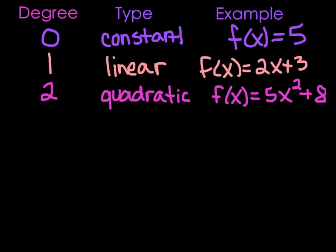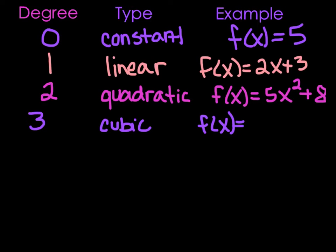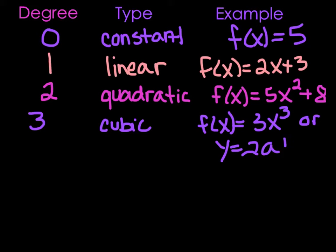If our degree is 3 — the highest power is 3 — that's a cubic. A cubic might look like f of x equals 3x cubed. Also, this doesn't just have to be x — we could have y equals 2abc. It has three variables in it, and we would still consider that to be cubic, even though they're all different variables.